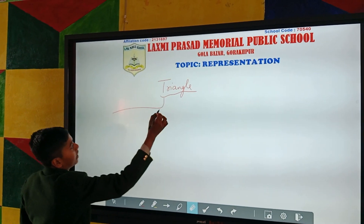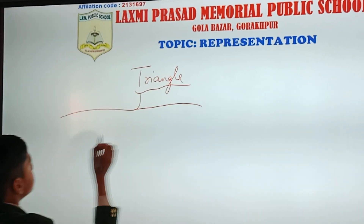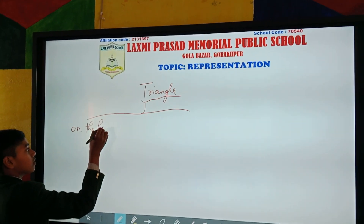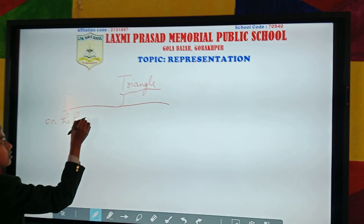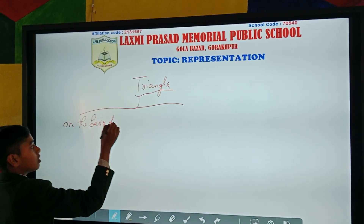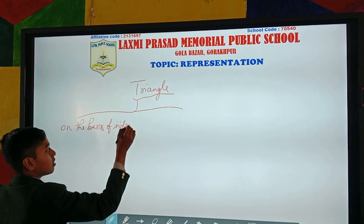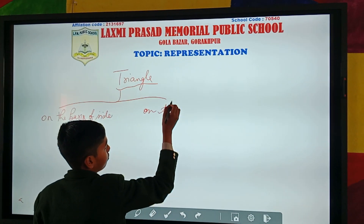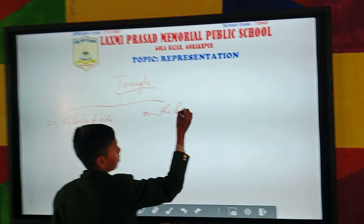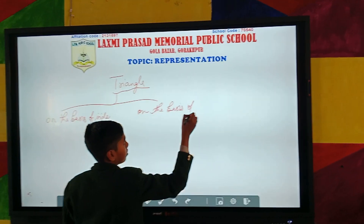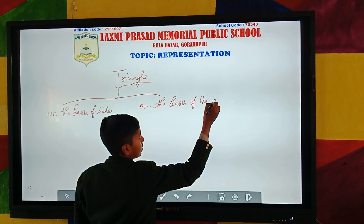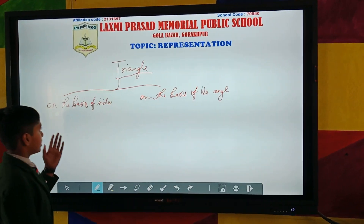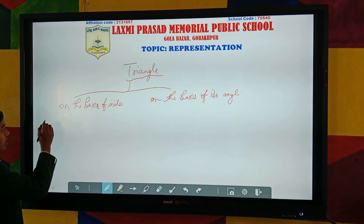Triangle is divided into two parts: first on the basis of sides, and on the basis of its angle. On the basis of its sides, triangles have three parts.